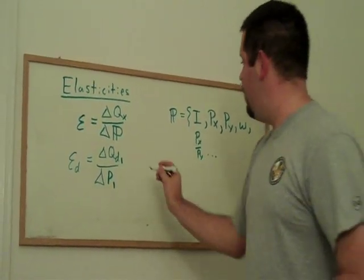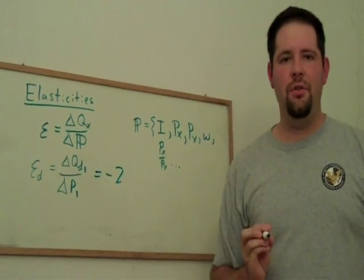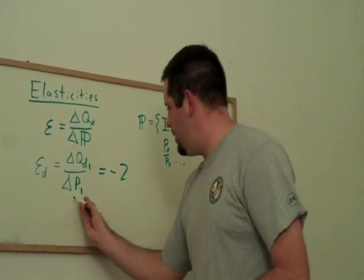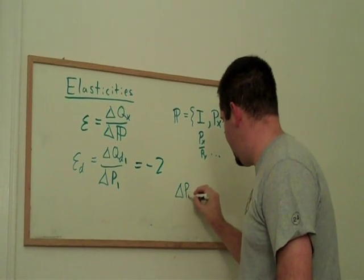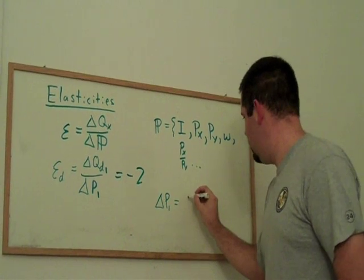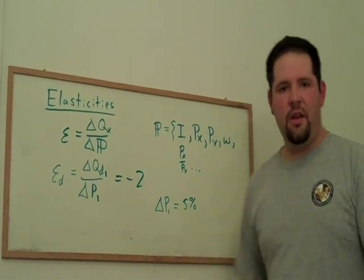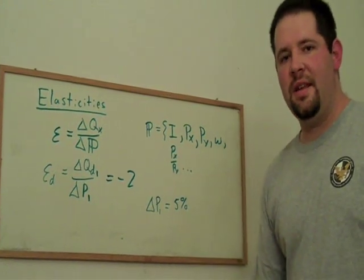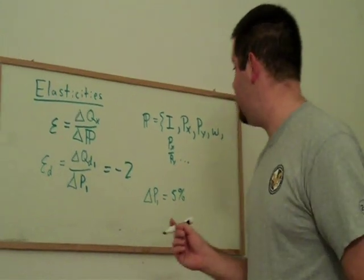So, for example, if the elasticity of demand is negative two, and we know that the price change here, let's pick something that's kind of interesting. Let's say the percentage increase in price was five percent. We could go ahead and use this elasticity as a way to figure out how much did quantity decrease as a percentage.